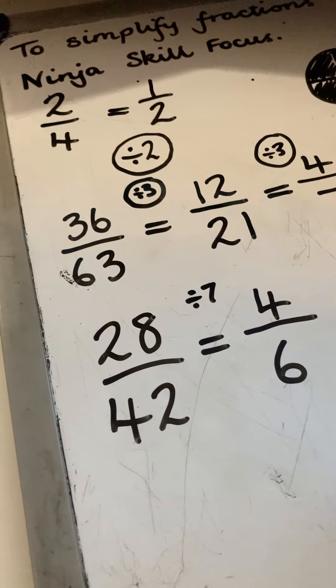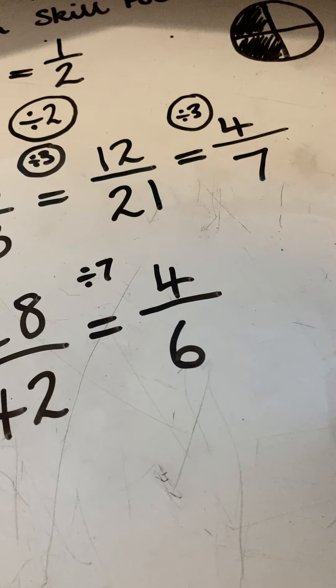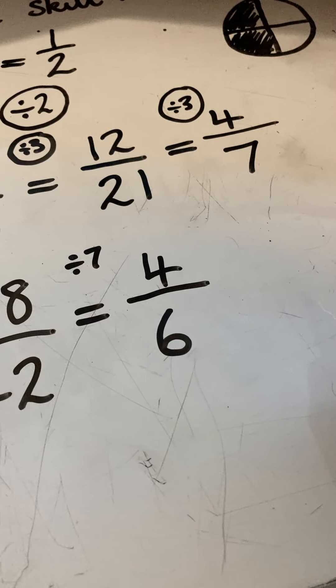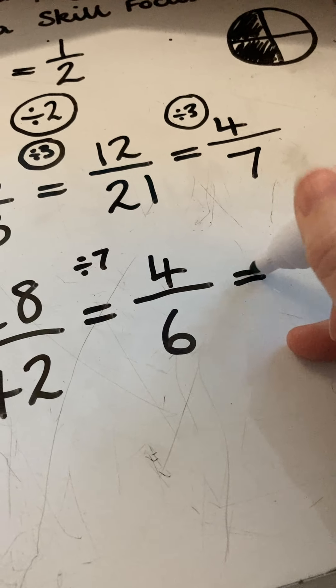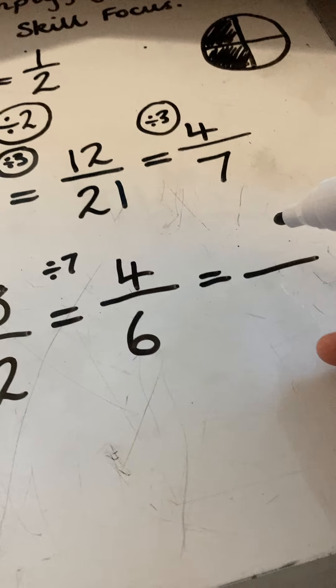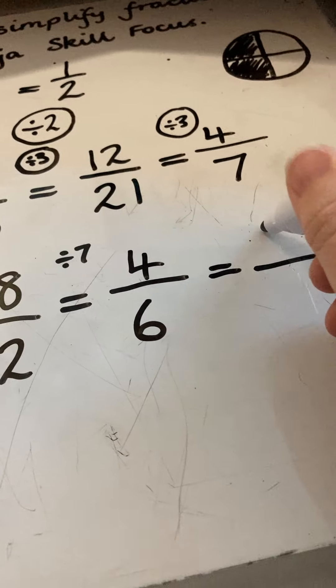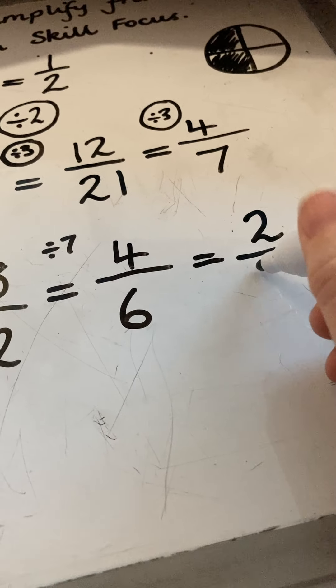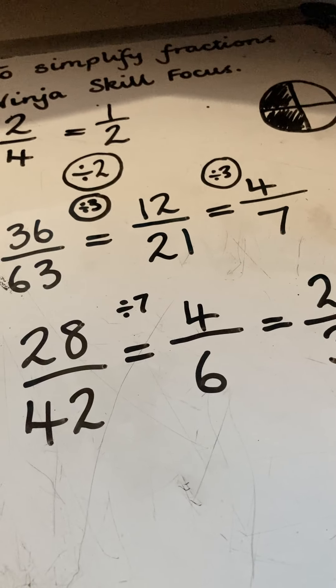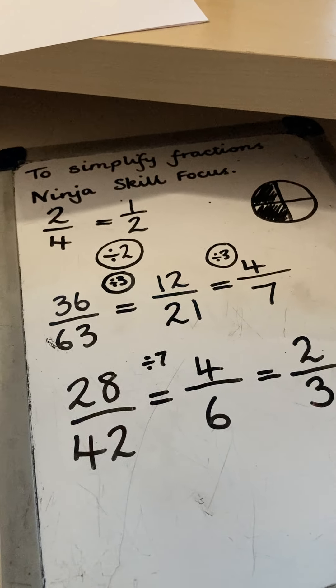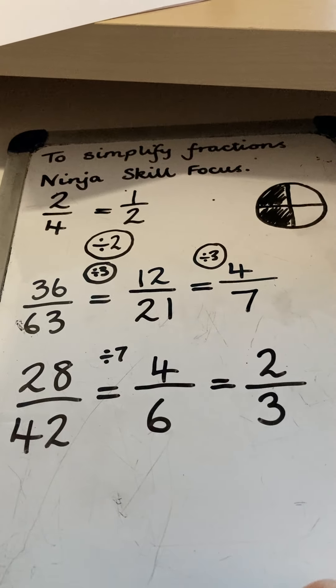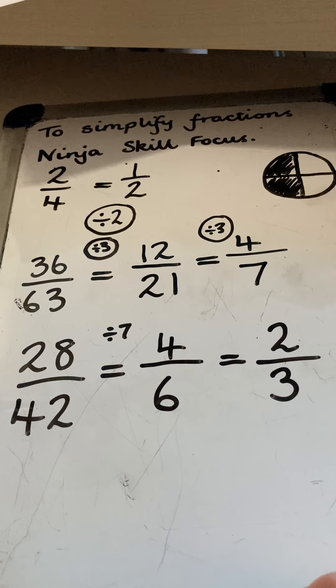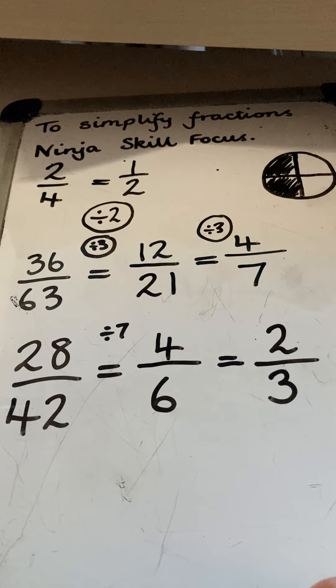And then I'm looking at this and I know that I can make it smaller. I can reduce both of them by halving them. Half of 4 is 2 and half of 6 is 3. And that is how I'm simplifying these fractions to find the answers on the numeracy ninja skill focus sheet.